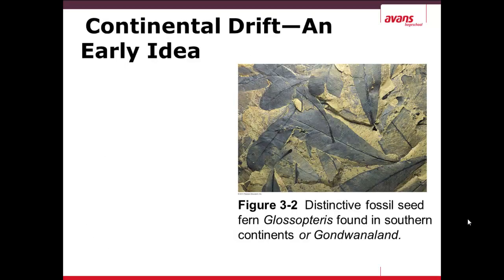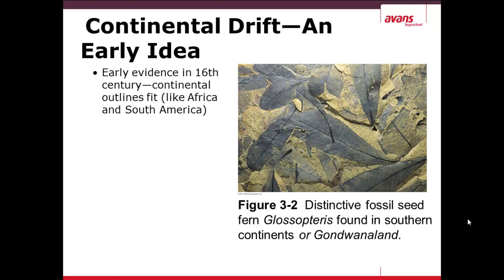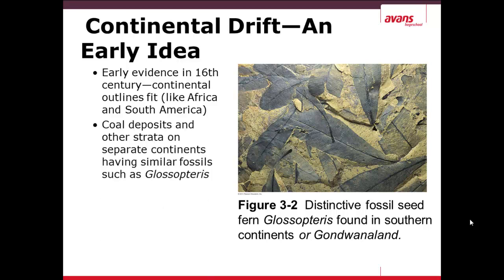Continental Drift. What is Continental Drift? In the early evidence in the 16th century they noticed that the continents seemed to link together, so Africa and South America seemed to fit like two puzzle pieces. Coal deposits and other strata, which are the layers of the geosphere, on these separate continents have similar fossils, such as the Glossopteris, which is found in the southern continents, that is South America and Africa, and that they possibly formed one supercontinent at one time, which they named Gondwanaland.